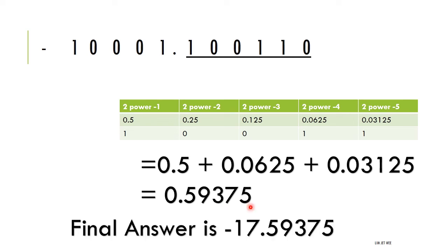Remember the front portion is negative seventeen, and the back portion is 0.59375. So the final answer is negative 17.59375.